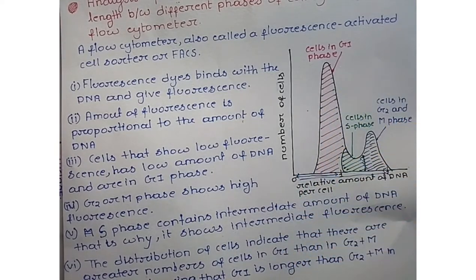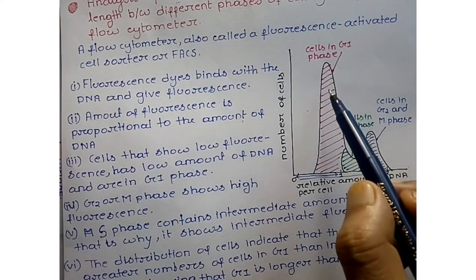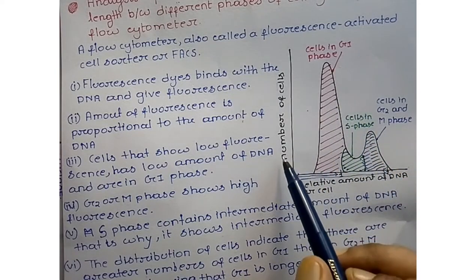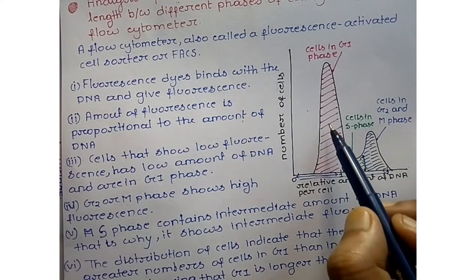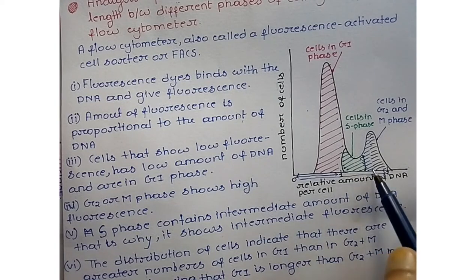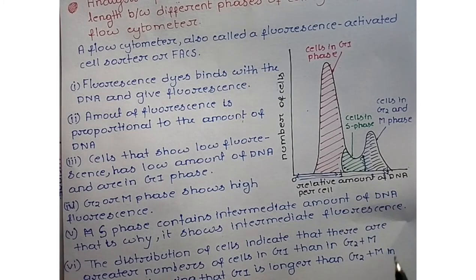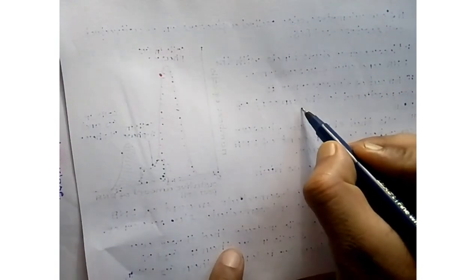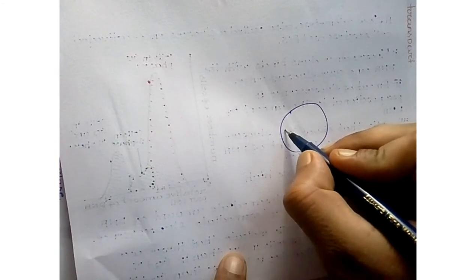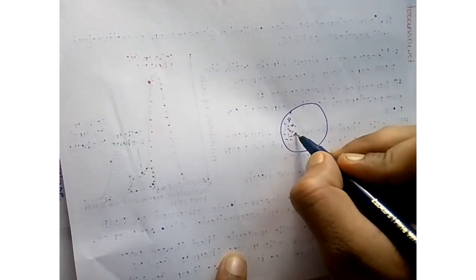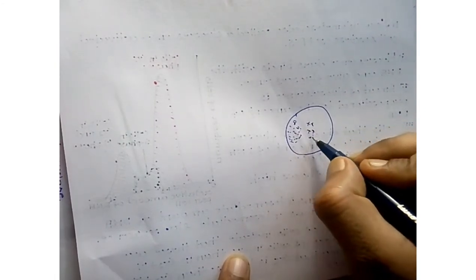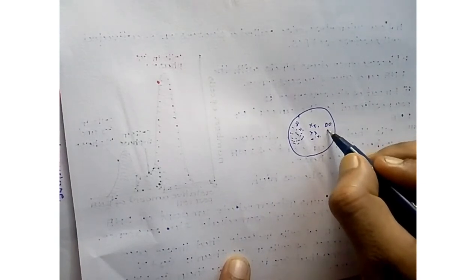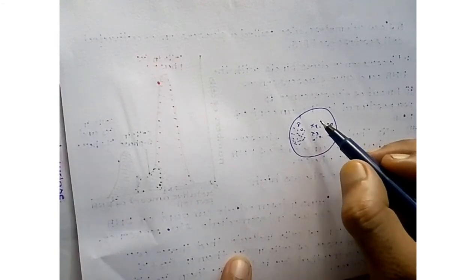From the graph, the y-axis represents number of cells. The number of G1 phase cells is very high compared to the others. In a culture of cells dividing asynchronously, there are several types of cells at different stages, and we can identify which phase each belongs to by analyzing their fluorescence.